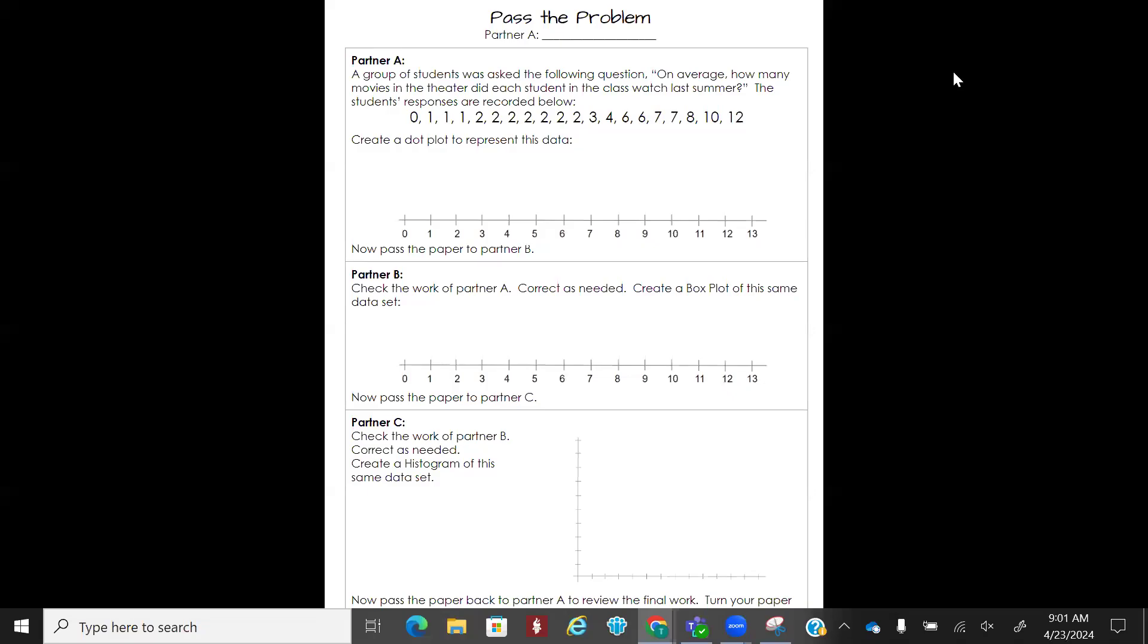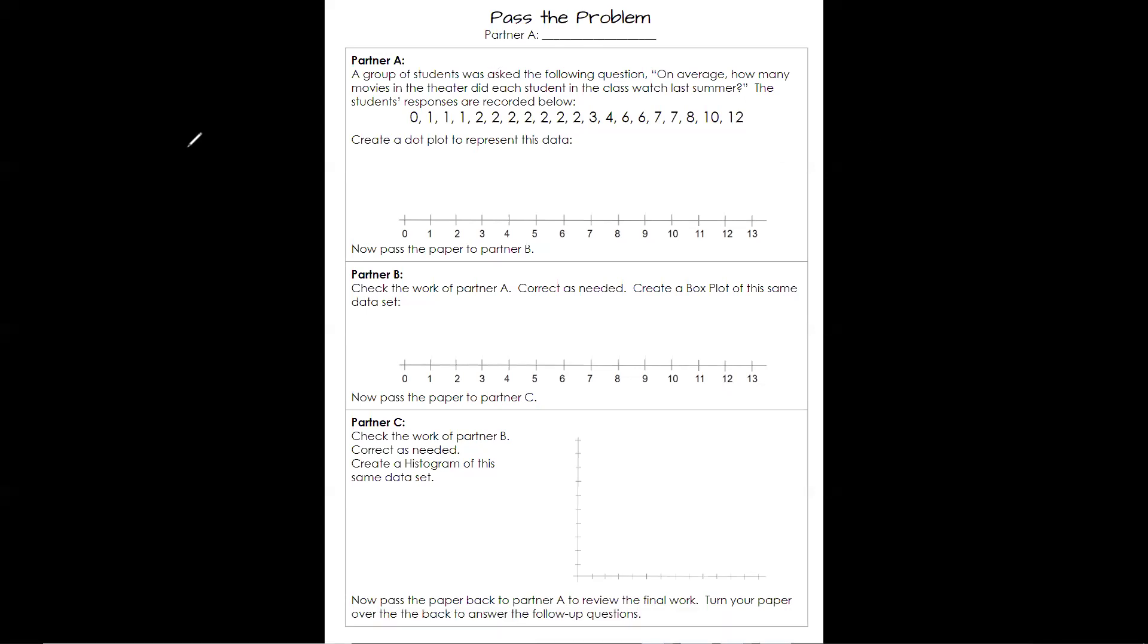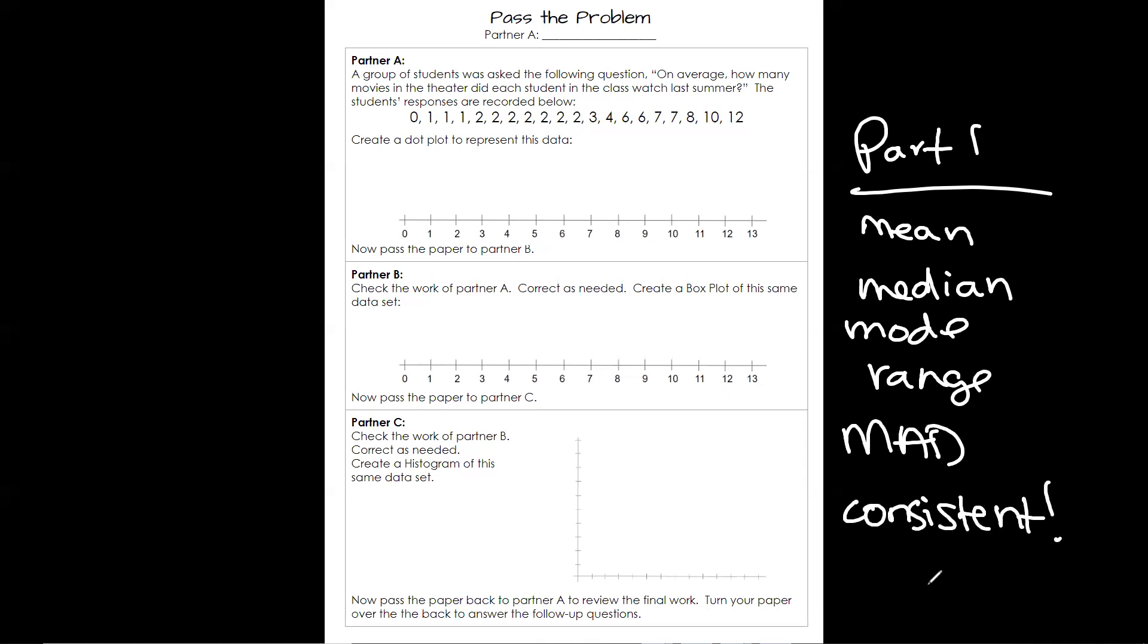Okay, your mastery track today has two parts. So the first part, what it's going to ask you to do is find, so part one, it's going to be mean, median, mode, range, MAD, and then it's going to ask which one is more consistent. That's supposed to be a question mark.